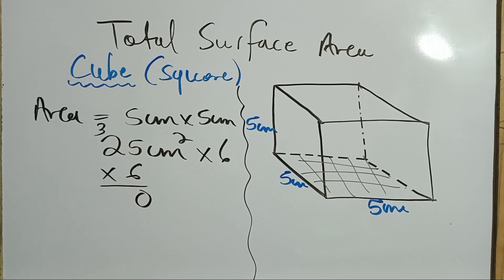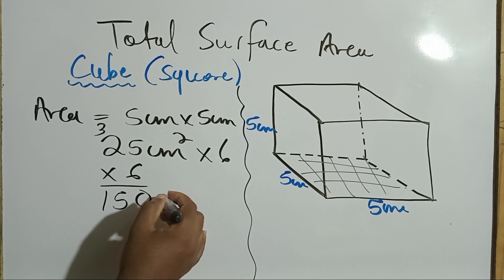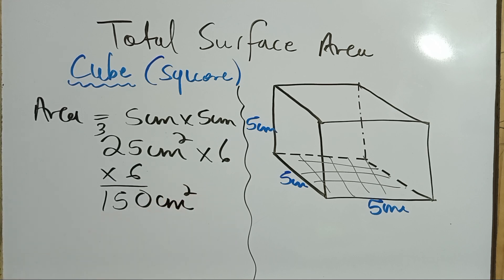Six times two is twelve, plus three, fifteen. So that would be 150 centimeters squared.